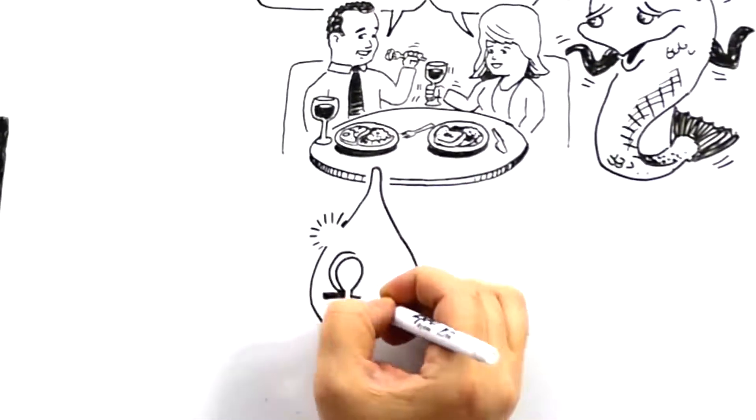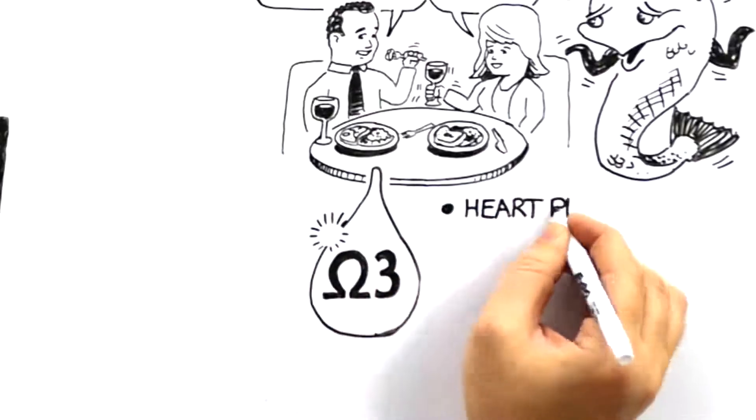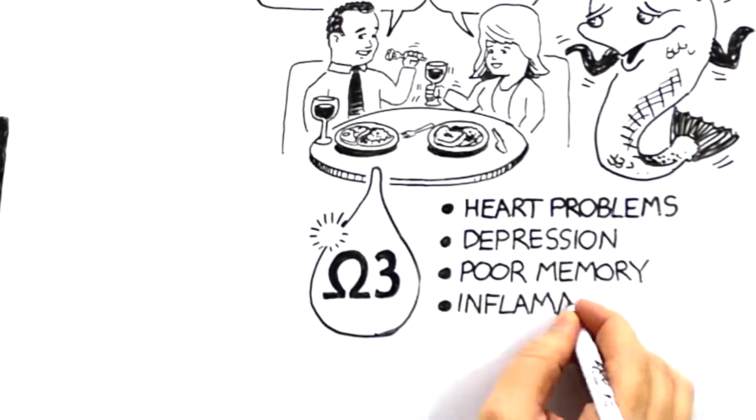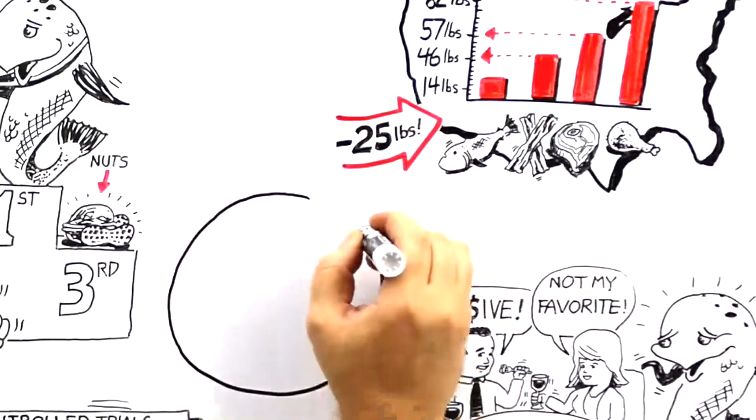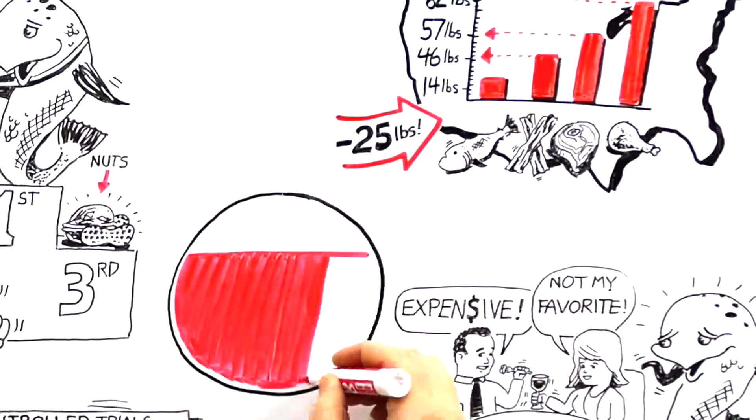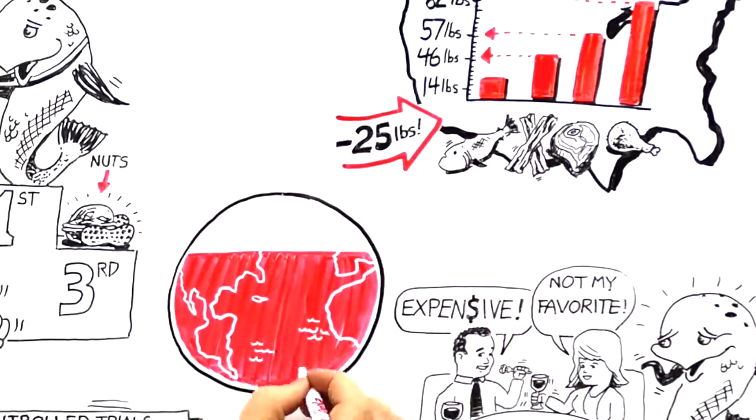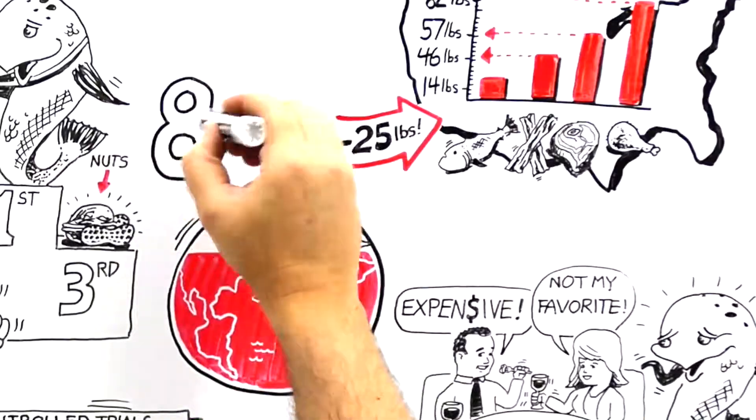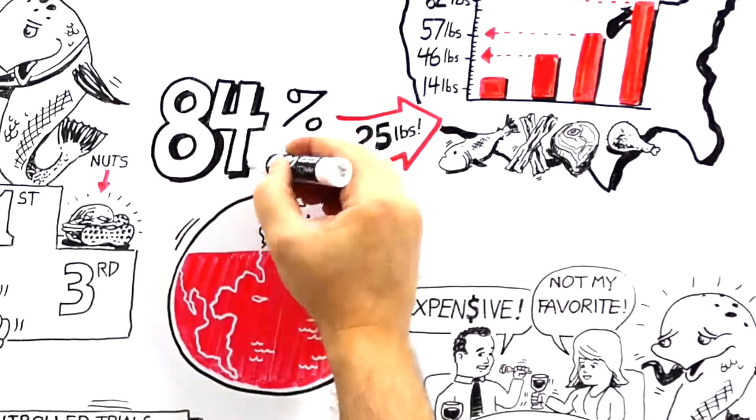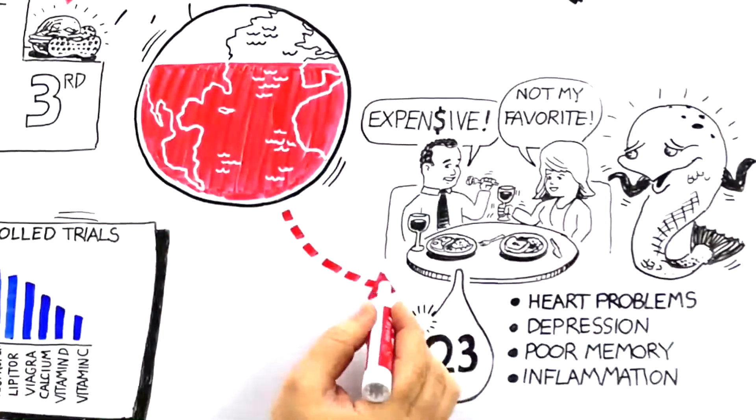And the worst part? It leaves them omega-3 deficient, which can lead to all kinds of health problems. According to the Global Organization for EPA and DHA Omega-3s, or GOED, 84% of the world's population lives in countries with diets that are omega-3 deficient.